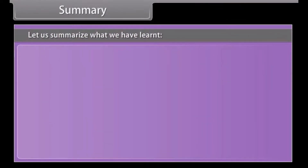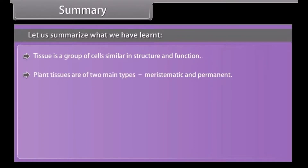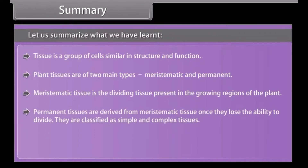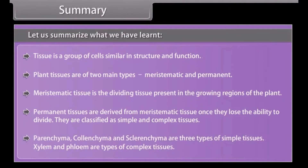Let us summarize what we have learned. Tissue is a group of cells similar in structure and function. Plant tissues are of two main types: meristematic and permanent. Meristematic tissue is the dividing tissue present in the growing regions of the plant. Permanent tissues are derived from meristematic tissue once they lose the ability to divide — they are classified as simple and complex tissues. Parenchyma, collenchyma and sclerenchyma are three types of simple tissues. Xylem and phloem are types of complex tissues.